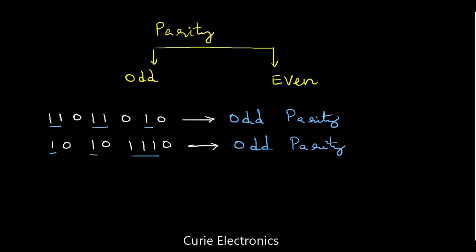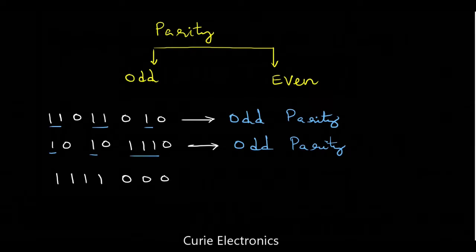Let's take one more example — 1 1 1 0 0 0. What is the parity? Is this odd parity or even parity? Here we have 4 ones. Number 4 is even, so this is even parity.